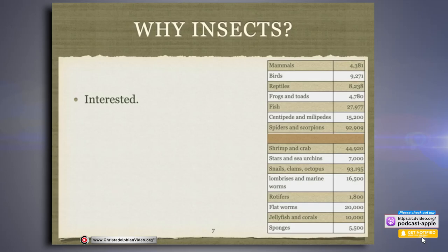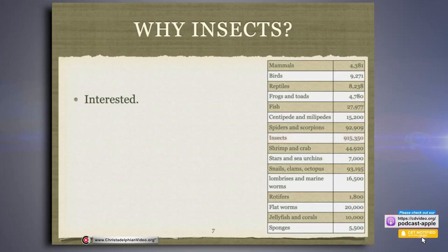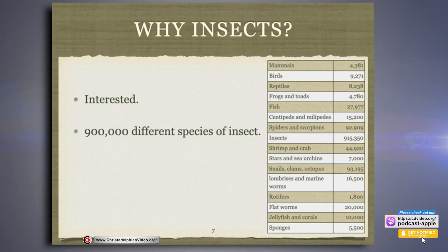A million? Good guess. Way more than a million — actually 915,000 different species of insects. So much more than all the other animals combined. Over 900,000 different species are insects, and that's 80% of all the world's species.